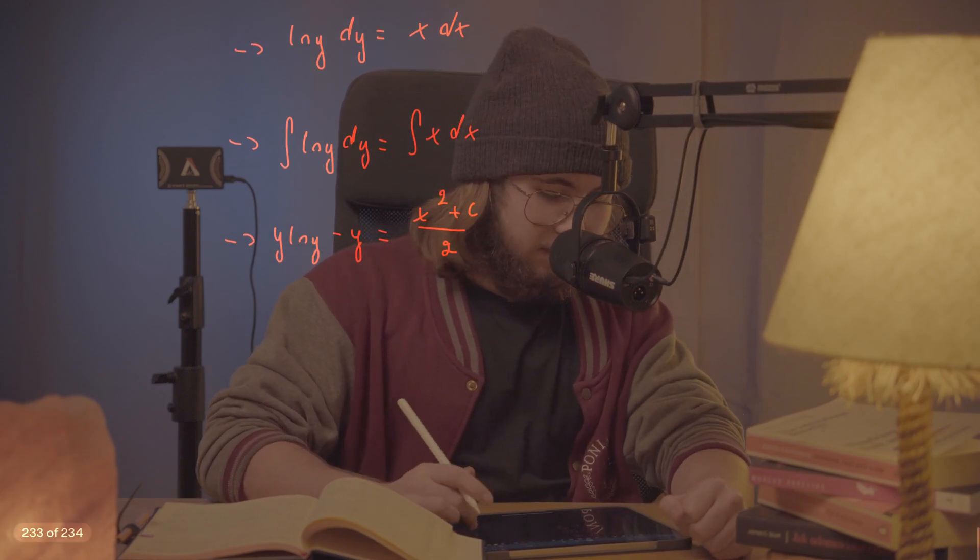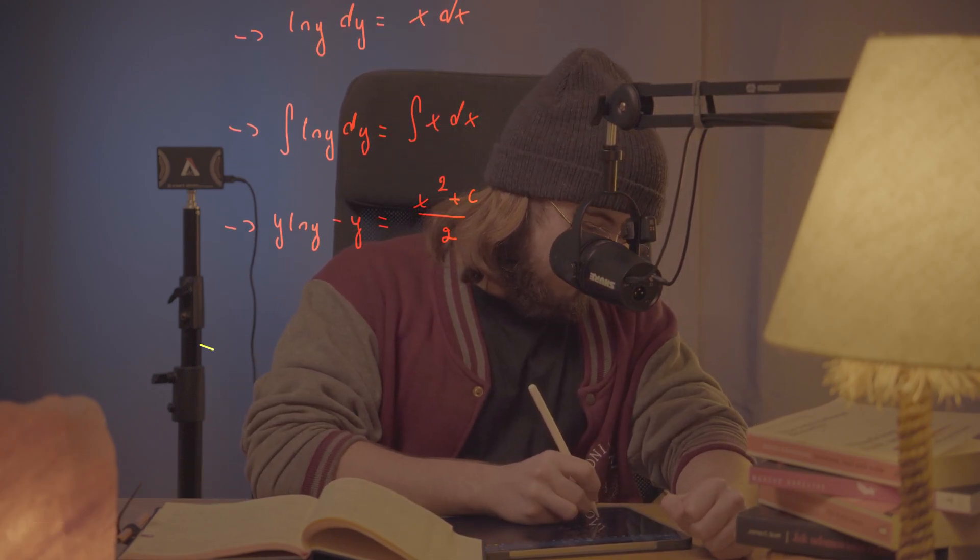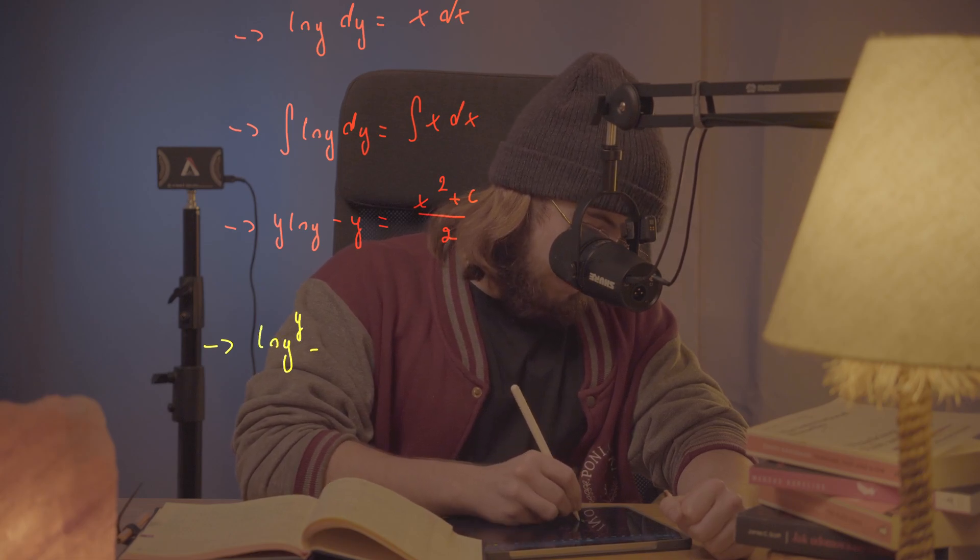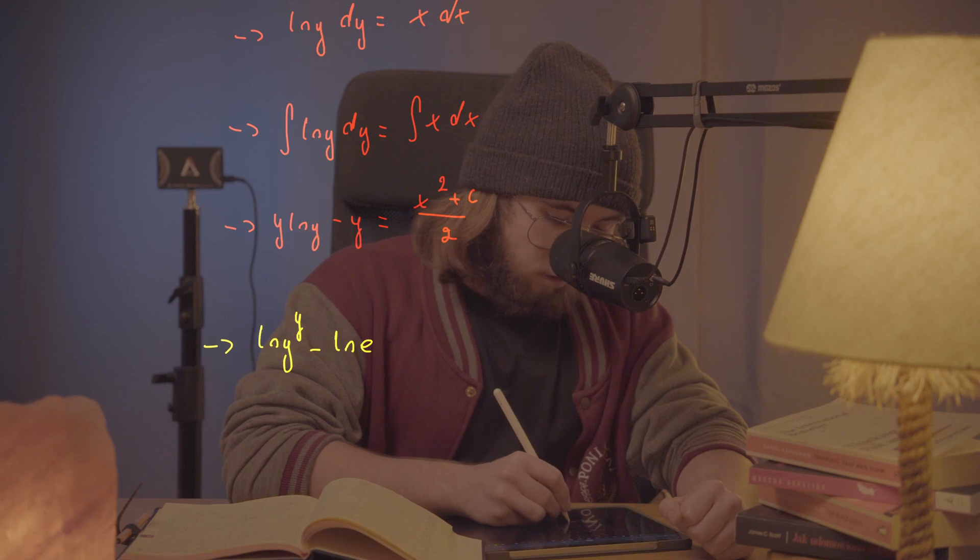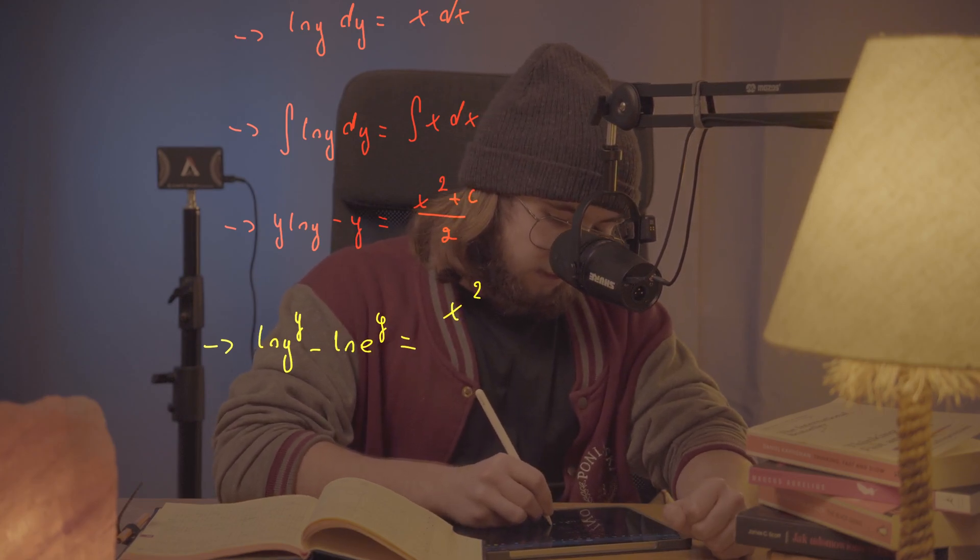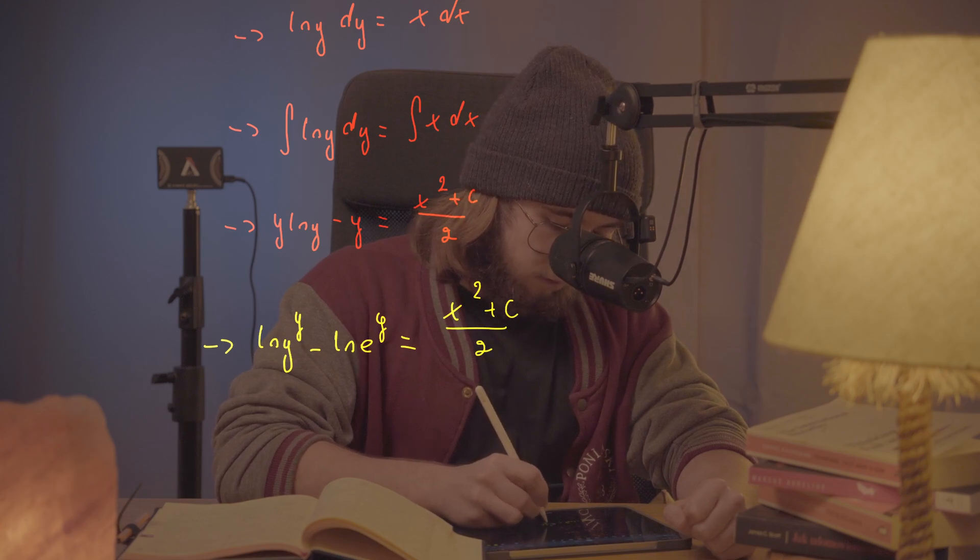So, how do I do it? I can rewrite the left-hand side. I can write the left-hand side as the natural log of y^y and then minus the natural log of e^y.